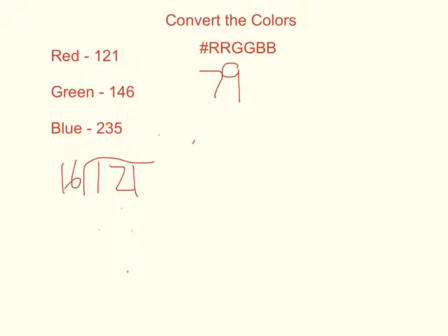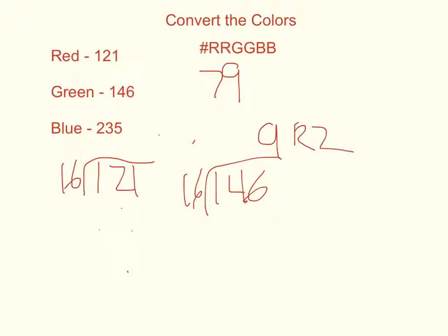Let's do it again with 146. 146 divided by 16 is going to be 9 with a remainder of 2. So the 2 is going to go in the first corresponding digit. Then 9 is what's left over, so that 9 is going to go in the second green digit right here. Remember, you're always putting the numbers in reverse order.